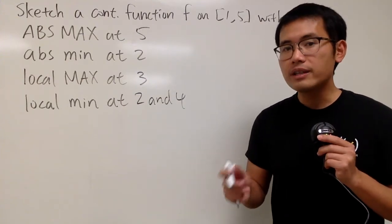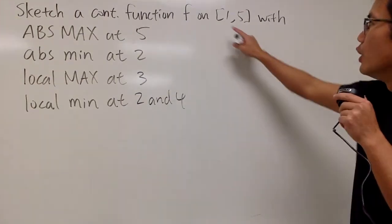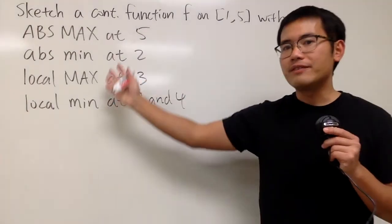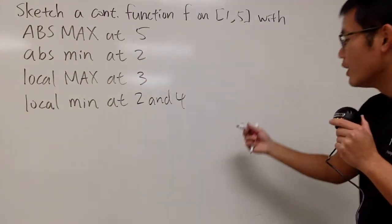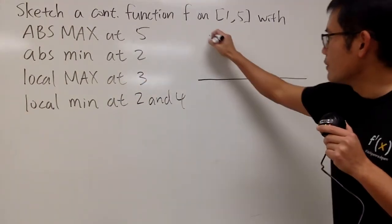Okay, we are going to sketch a function, and it has to be continuous on the interval 1 to 5, and it has to have all these properties. So here we go. Well, again, we just need to go from 1 to 5.